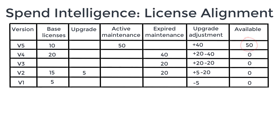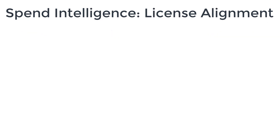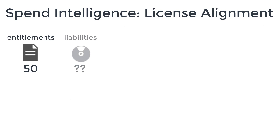Notice that in our example, if we had 60 active maintenance licenses for V5 we wouldn't be entitled to 60 licenses, because there are not 60 base licenses to associate the maintenance with. Now that we have determined that we have 50 available licenses for Vantosi V5, we can compare this with the number of installations.